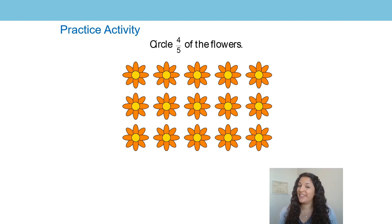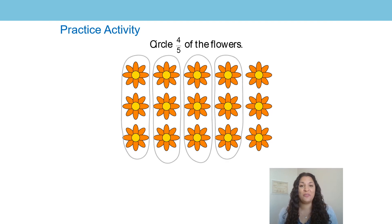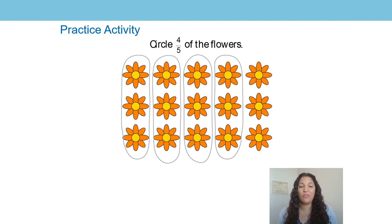Your practice activity now is to circle four-fifths of the flowers. There are the same number of flowers, but this time I want you to show me four-fifths. If you need to circle four-fifths, what is the denominator? How many equal parts should there be? Have a go at pausing the video now to circle four-fifths of the flowers. Here's my example: I have circled four-fifths — I have five equal parts and I've circled four of them. As long as you divided the whole into five equal parts and circled four of those parts, you have circled four-fifths of the flowers.